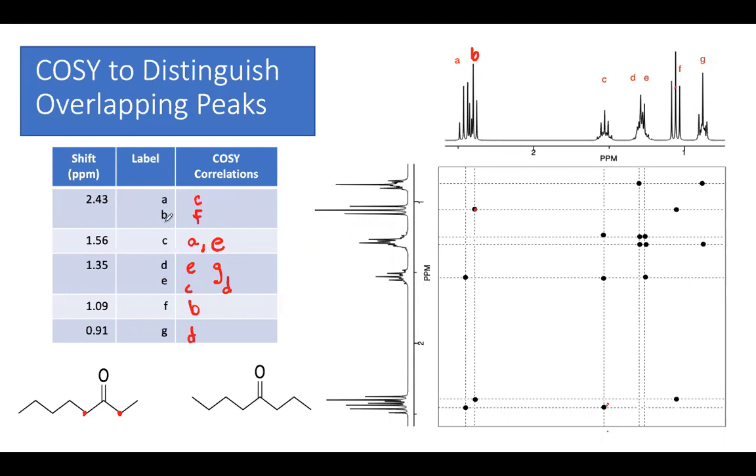So now if I look at this, my peaks at 2.43 are probably the two peaks on the sides of the carbonyl because they're pulled the furthest down. So if A and B are next to the carbonyl, and I put A on one side and B on the other side. And A is connected to C.